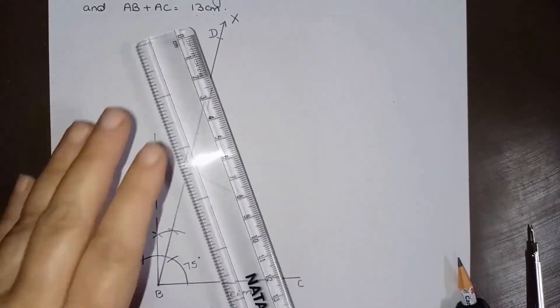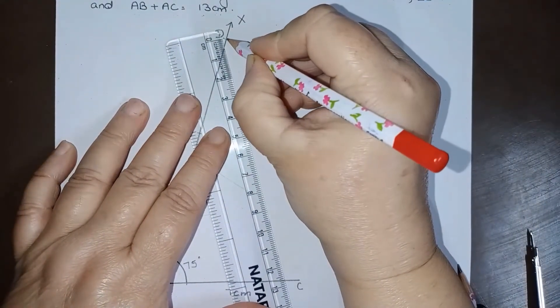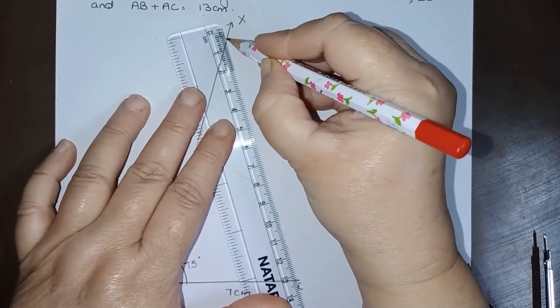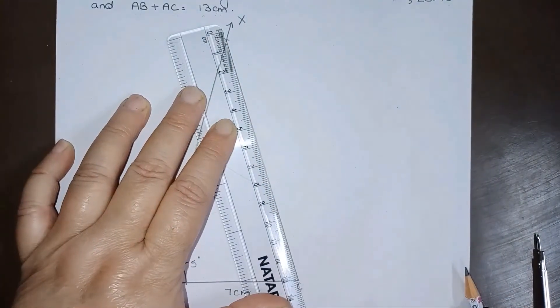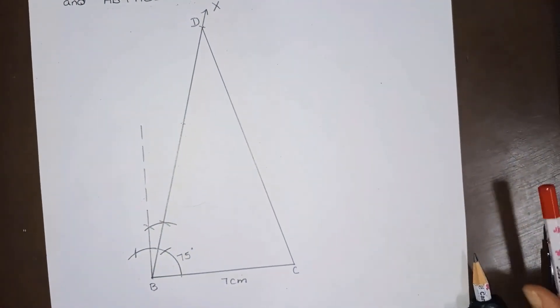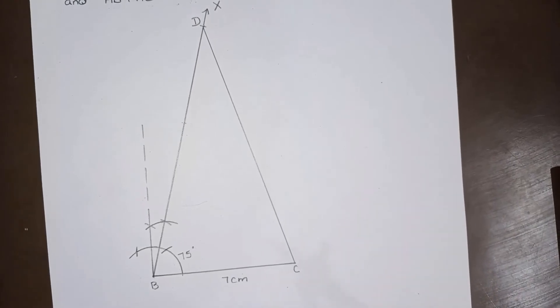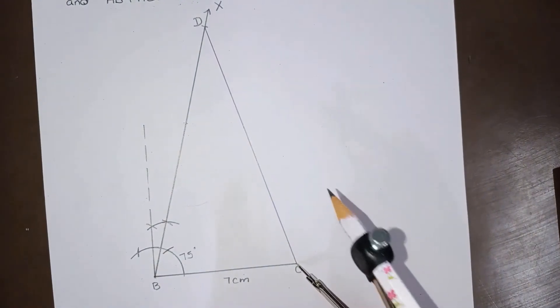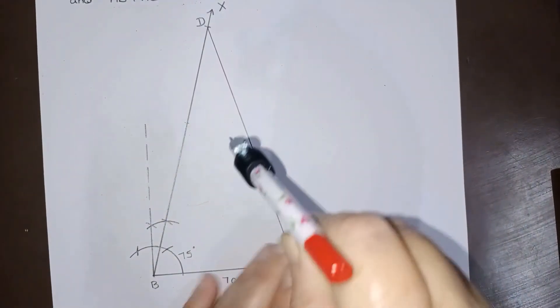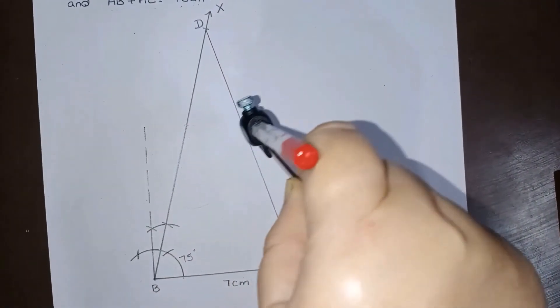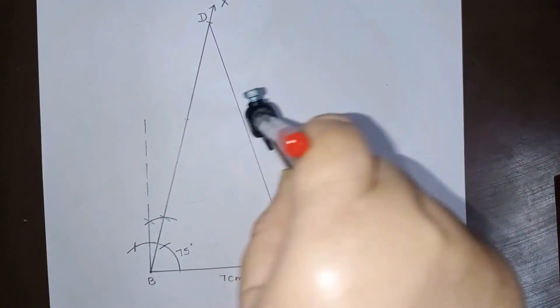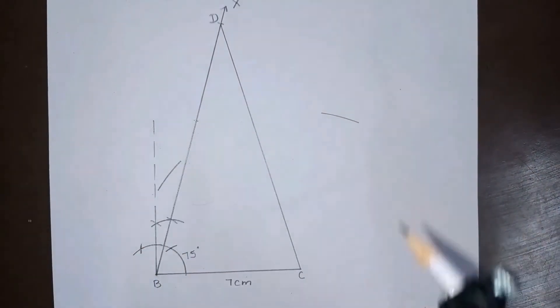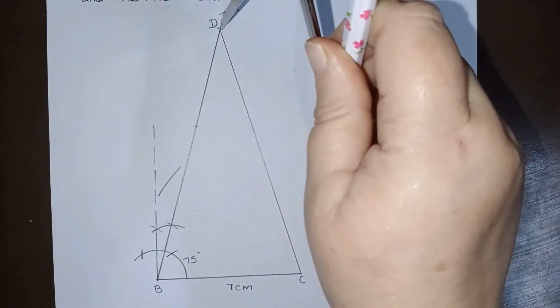Now the next step is we have to join this D point with C point. D point with C like this. So the next step will be we will be drawing perpendicular bisector of CD. This is CD. So let us draw perpendicular bisector of CD, and the method is we have to open our compass more than half of CD, approximately more than half of CD. So one arc here, one arc here, and similarly from point D.